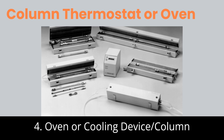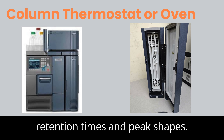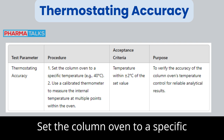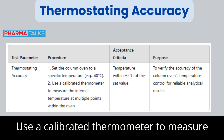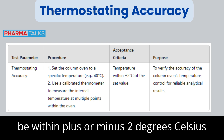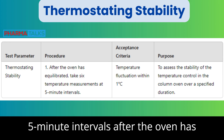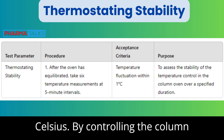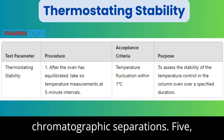4. Oven or Cooling Device. The oven or cooling device regulates the temperature of the HPLC column, which is critical for consistent retention times and peak shapes. Thermostating Accuracy: set the column oven to a specific temperature, such as 40°C, and use a calibrated thermometer to measure the internal temperature at multiple points. The temperature should be within ±2°C of the set value. Thermostating Stability: take 6 temperature measurements at 5-minute intervals after the oven has equilibrated; the temperature should fluctuate by no more than 1°C. By controlling the column temperature accurately and stably, these tests ensure reliable and reproducible chromatographic separations.